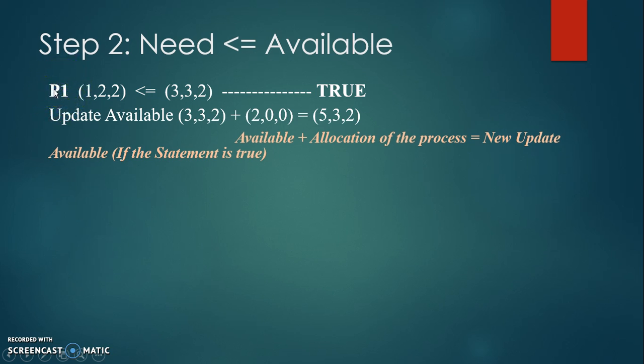P1 as process 1 with need (1, 2, 2) less than or equal to available (3, 3, 2). You have to check. At this point, students make confusion: they forget that for each process, you have to check which is 3 equals A and 1 equals A, 2 equals B, 2 equals C, and 3 equals B, this one equals C. You have to compare A, which is 3, with 1 for A. Is 1 less than 3? Yes, true. Proceed to the next.